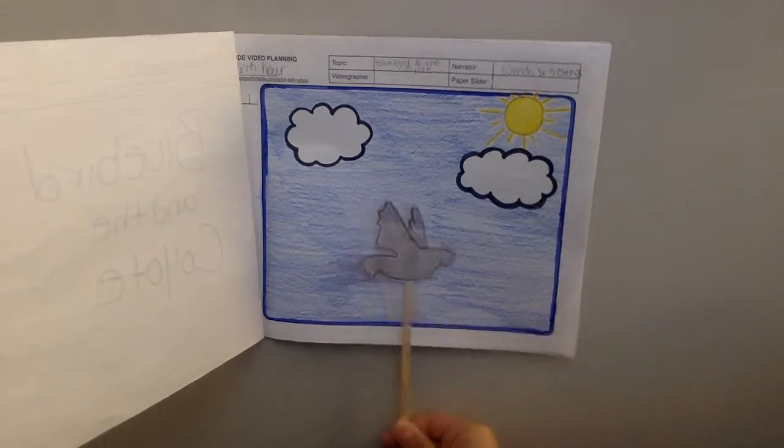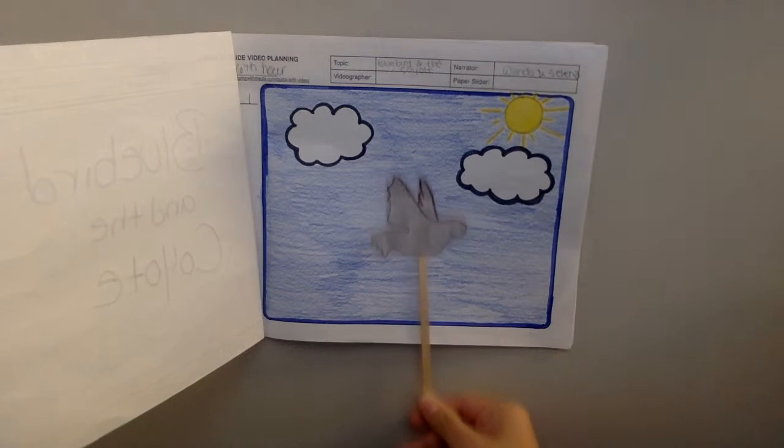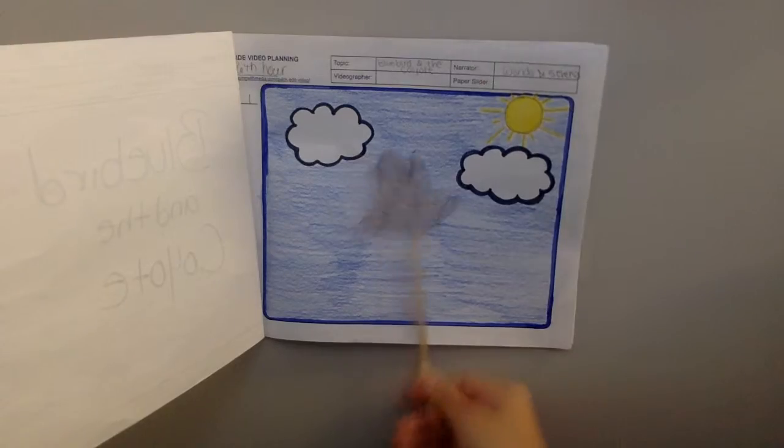A long time ago, the bluebird's feathers were a very dull, ugly color. It lived near a lake with waters of the most delicate blue, which never changed, because no stream flowed in or out.